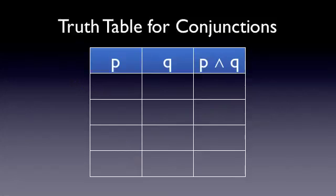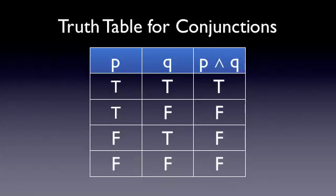Here is a truth table for conjunctions. So if P and Q are both true, the statement P and Q is also true. If P is true, but Q is false, the statement P and Q is false. So as you can see, unless both P and Q are true, P and Q is false.